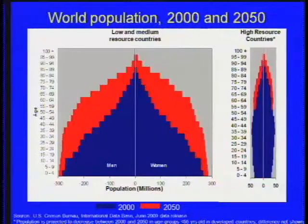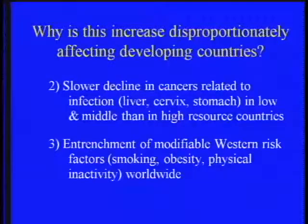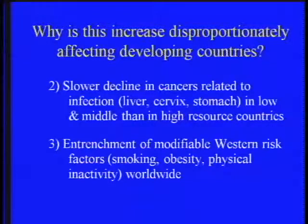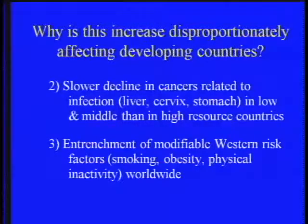In contrast, high-resource countries are aging but don't have the huge population of younger people to amplify it. The other reasons for disproportionate impact on developing countries include a slower decline in the major infection-related cancers — liver, cervix, and stomach — and the entrenchment of modifiable risk factors: smoking, obesity, and physical inactivity worldwide. Paradoxically, we are making progress against smoking in rich countries while going backwards in poor countries.